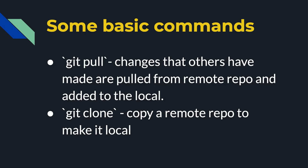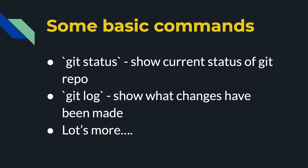A git clone is generally what you do when you start — when someone says, 'hey, I have a repository you need to take a look at,' you could then clone their repository, which essentially copies their remote repository to your local machine so you can then work on it. Some other quick commands: git status will show your current status of your git repo, and git log could be useful to see what changes have been made.